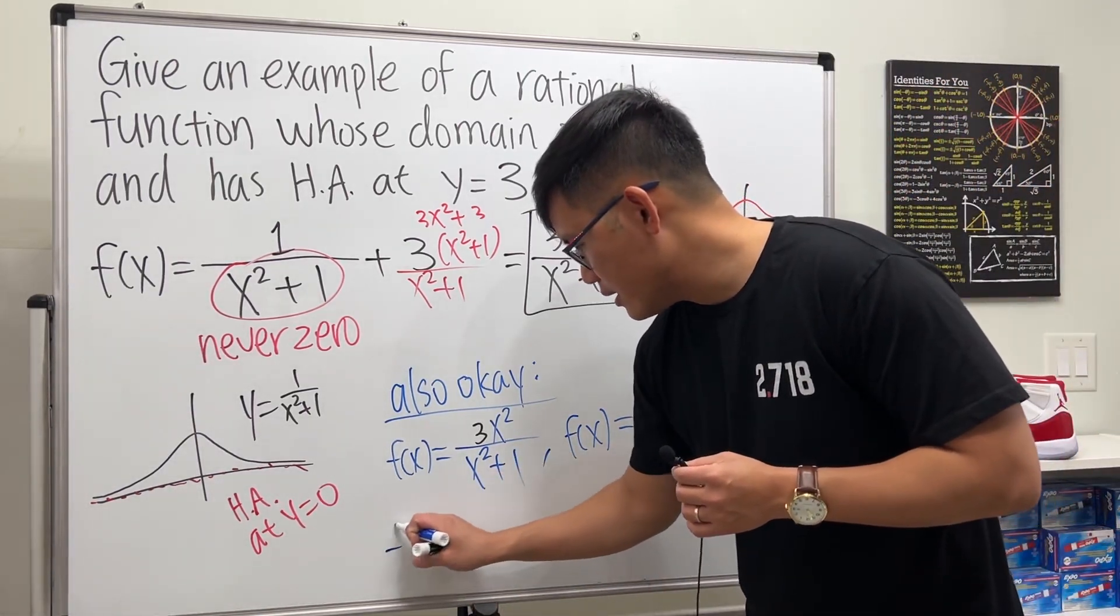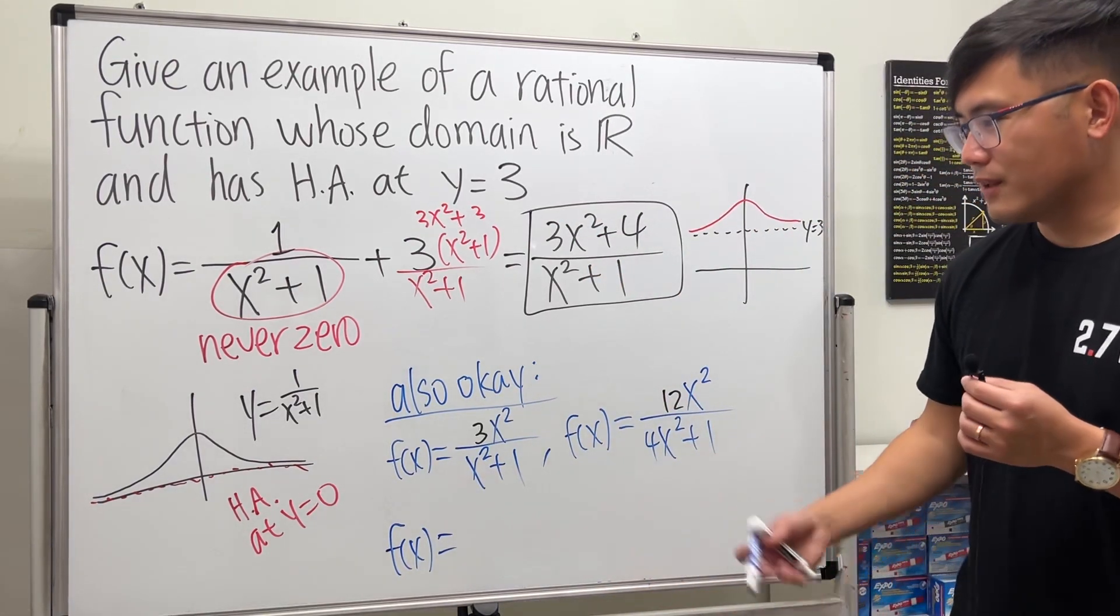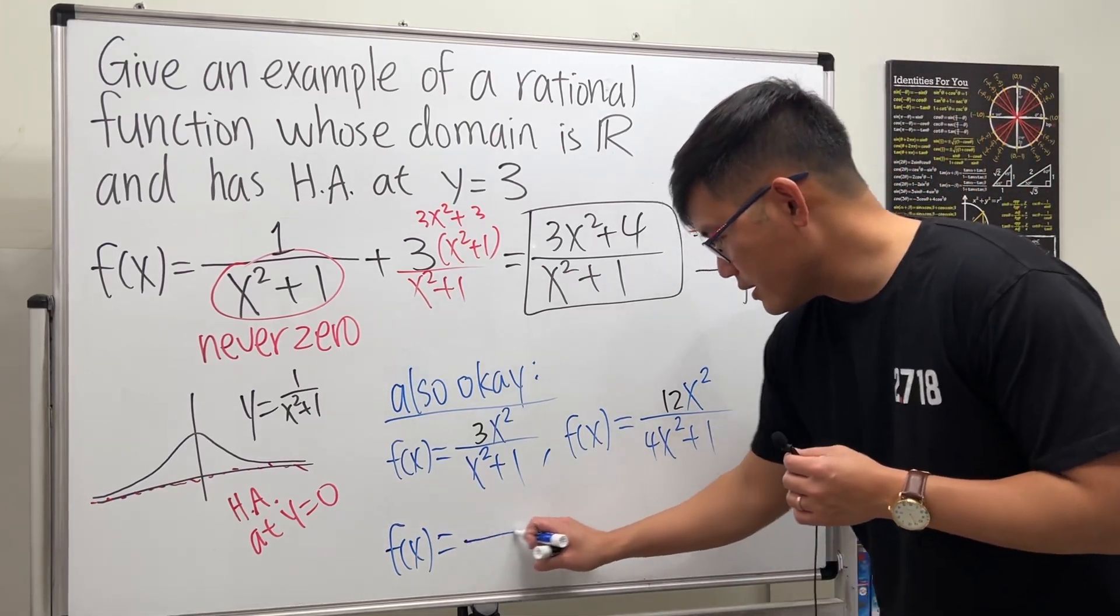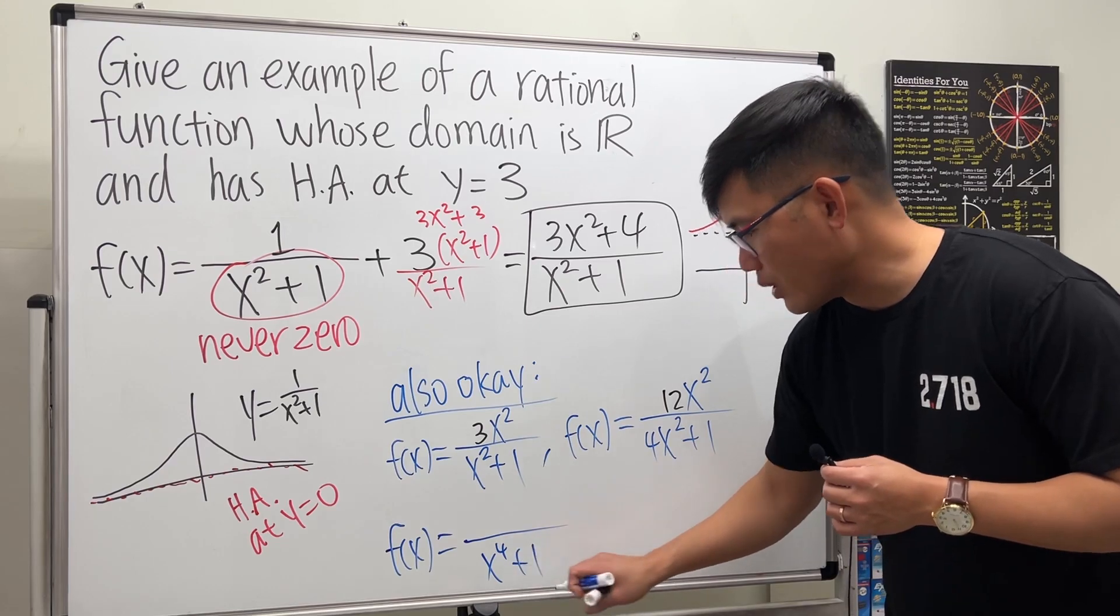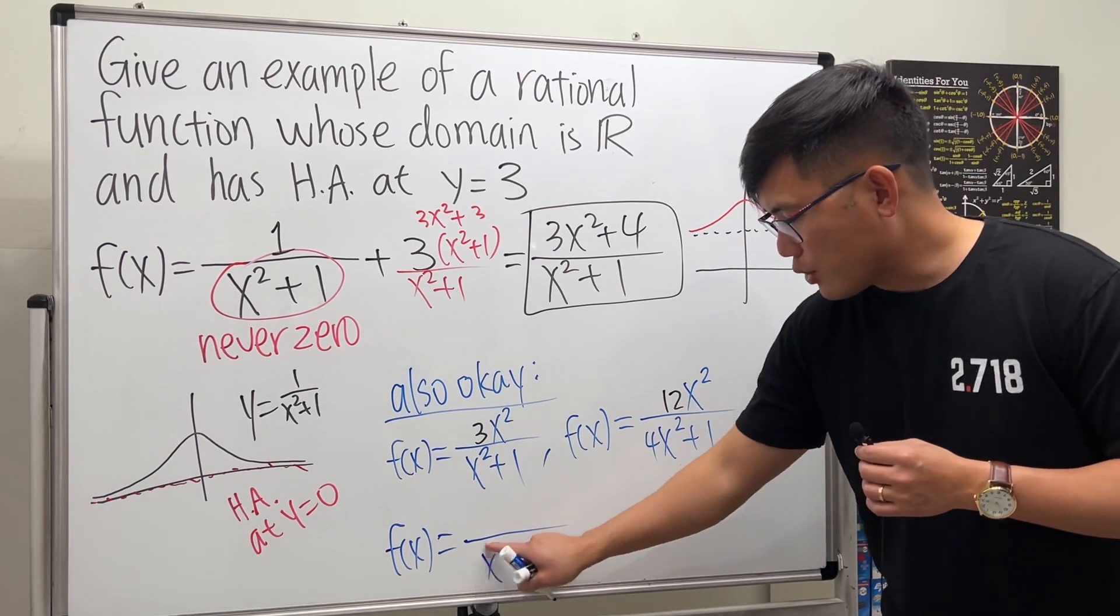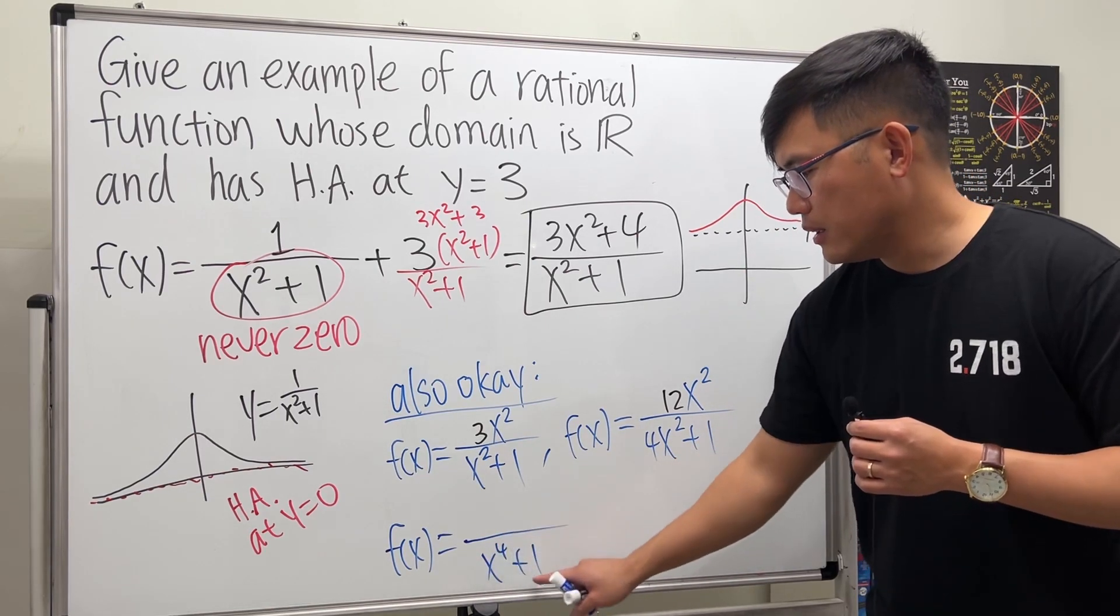And if you don't want x to the second power on the bottom, if you want to be different than your classmates—you want like the super fancy iPhone 15, not just the iPhone 14—you do this on the bottom instead of x squared: you put x to the fourth power plus 1.